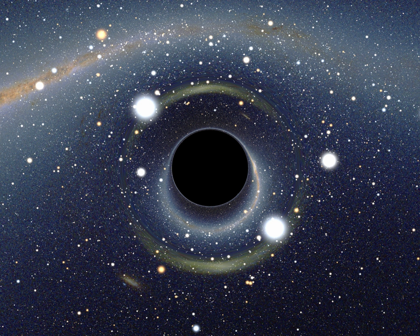A stellar black hole is a black hole formed by the gravitational collapse of a star. They have masses ranging from about five to several tens of solar masses. The process is observed as a hypernova explosion or as a gamma-ray burst. These black holes are also referred to as collapses.